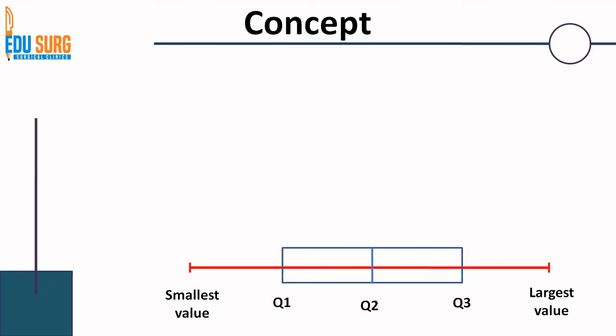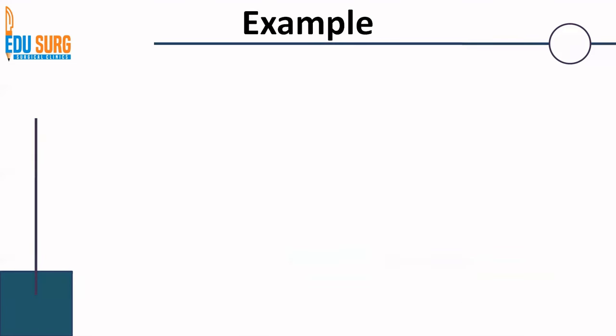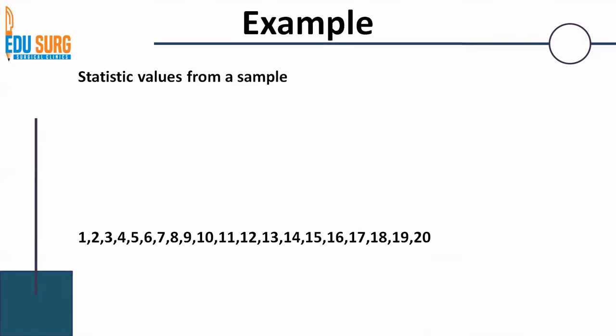A box plot gives you more information and this is basically the box plot of a five-point summary. If you are asked the five-point summary in an exam, you are looking at the smallest value, the largest value, and the 25th, 50th, and 75th percentile — or the median, Q1, and Q3. Five-point summary is the numbers; the box plot is the graphical representation.